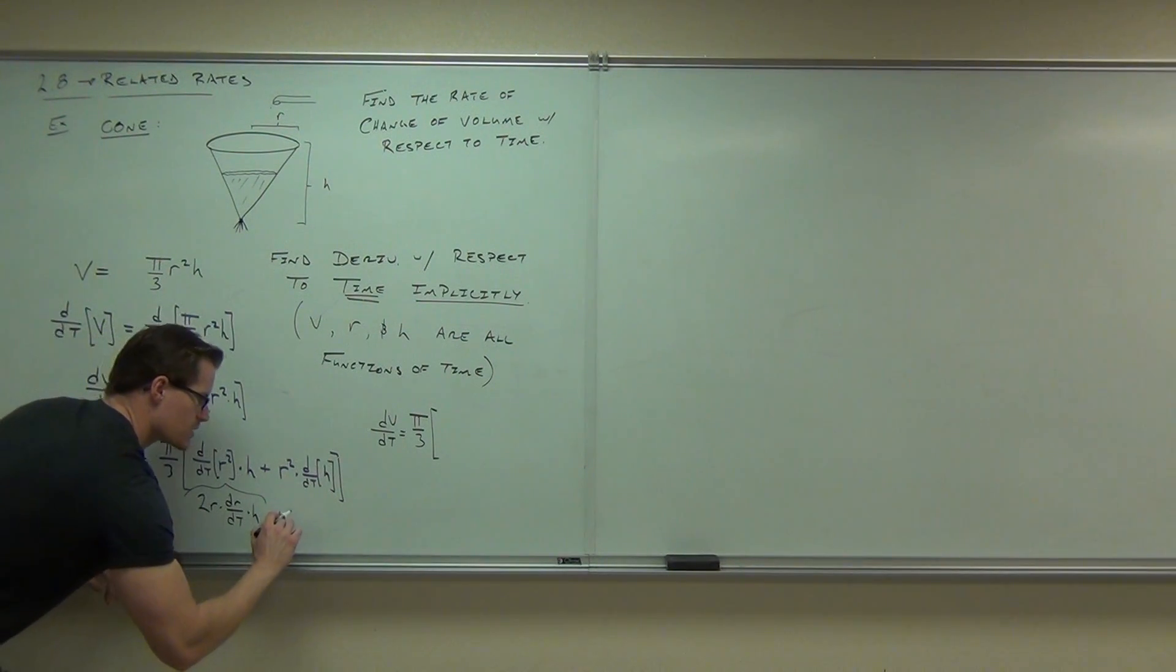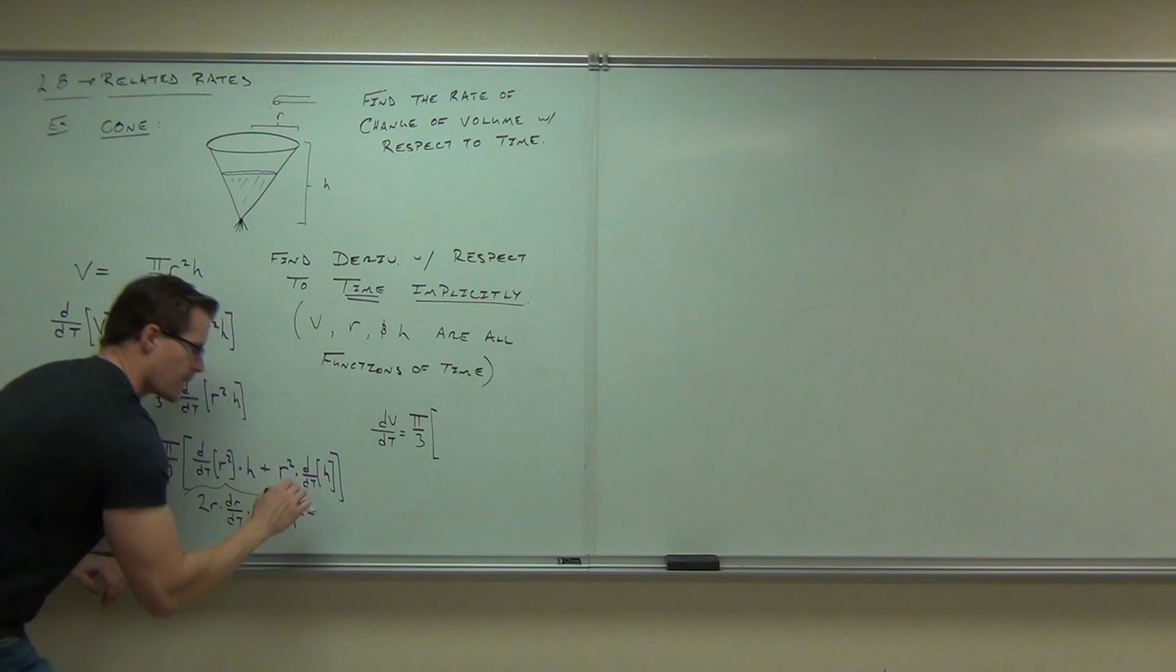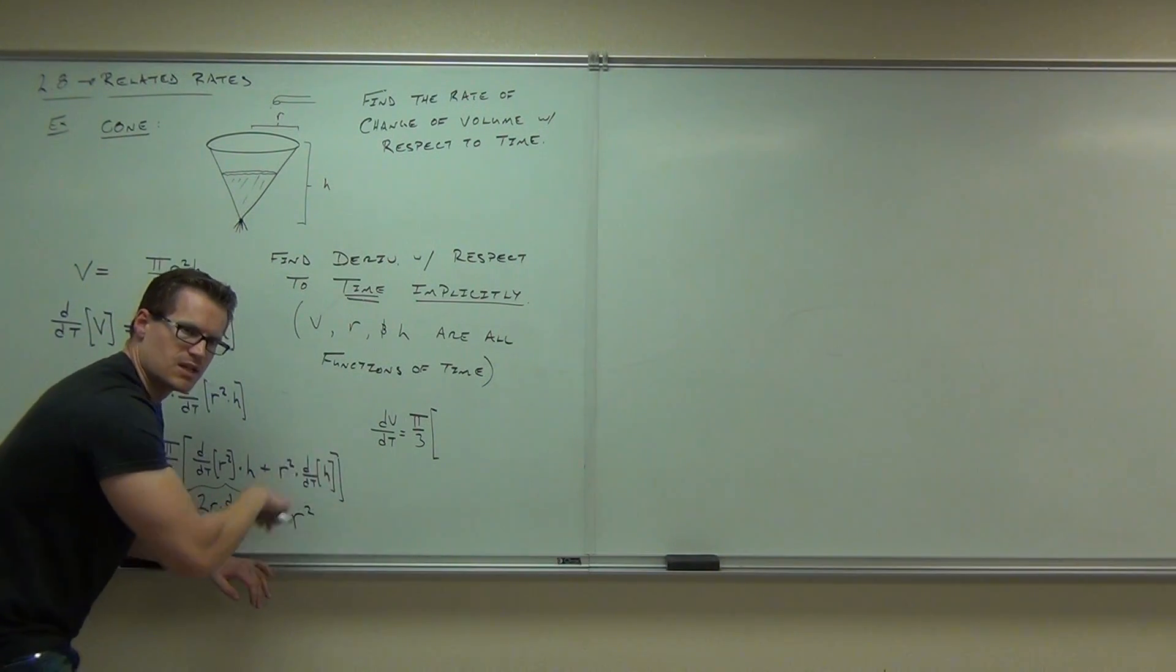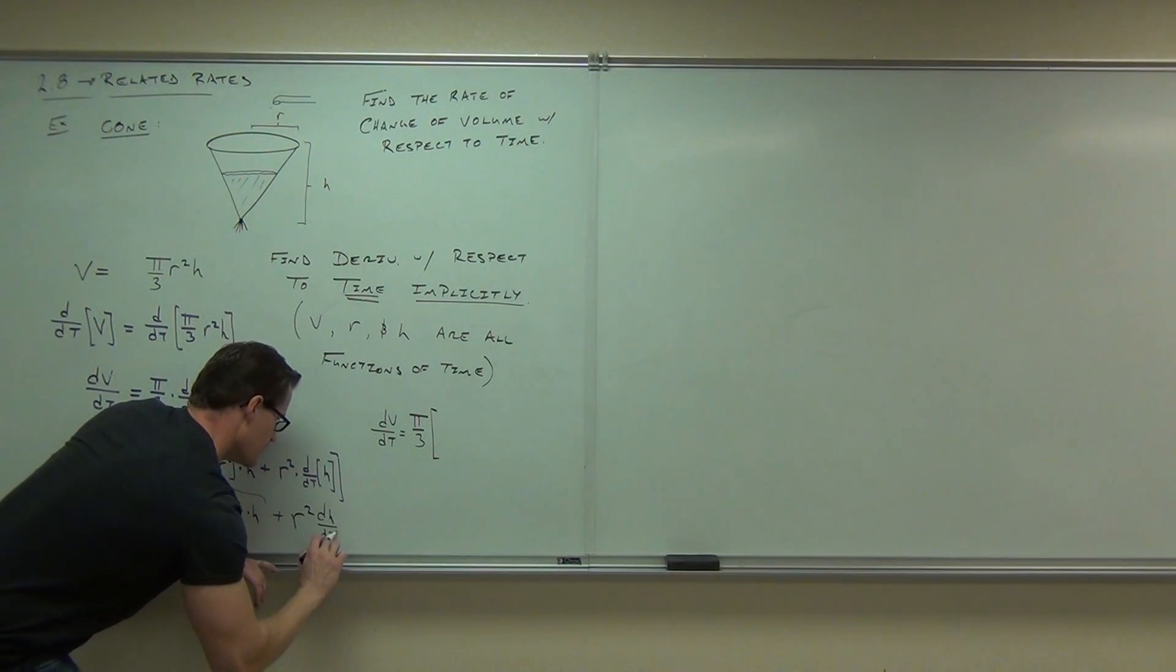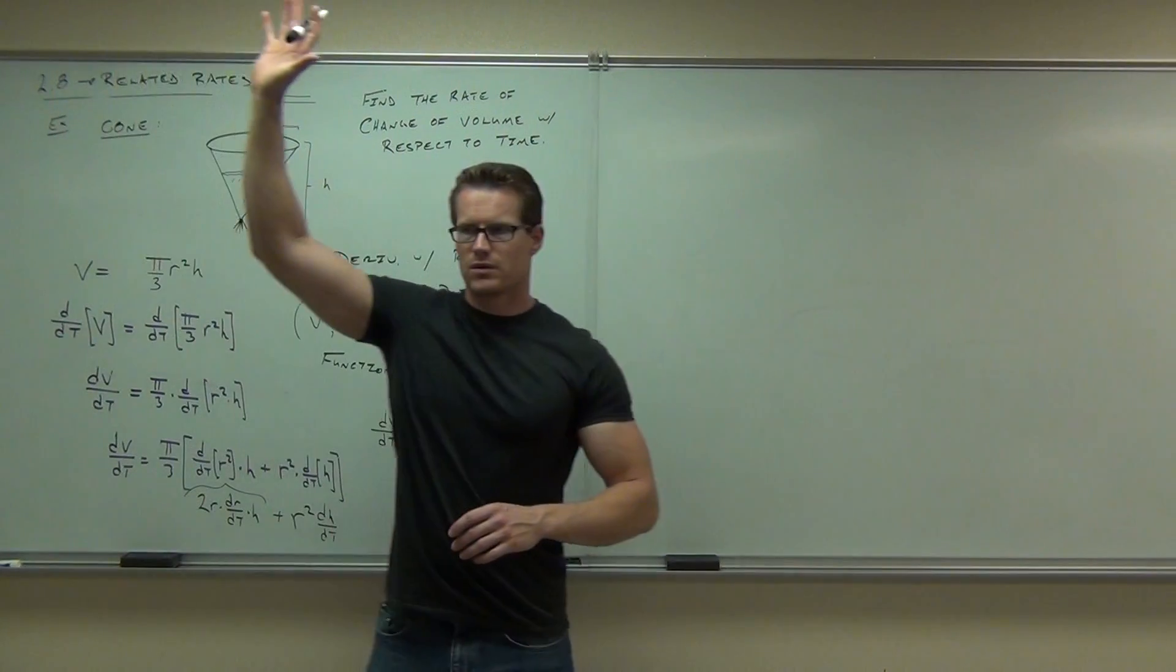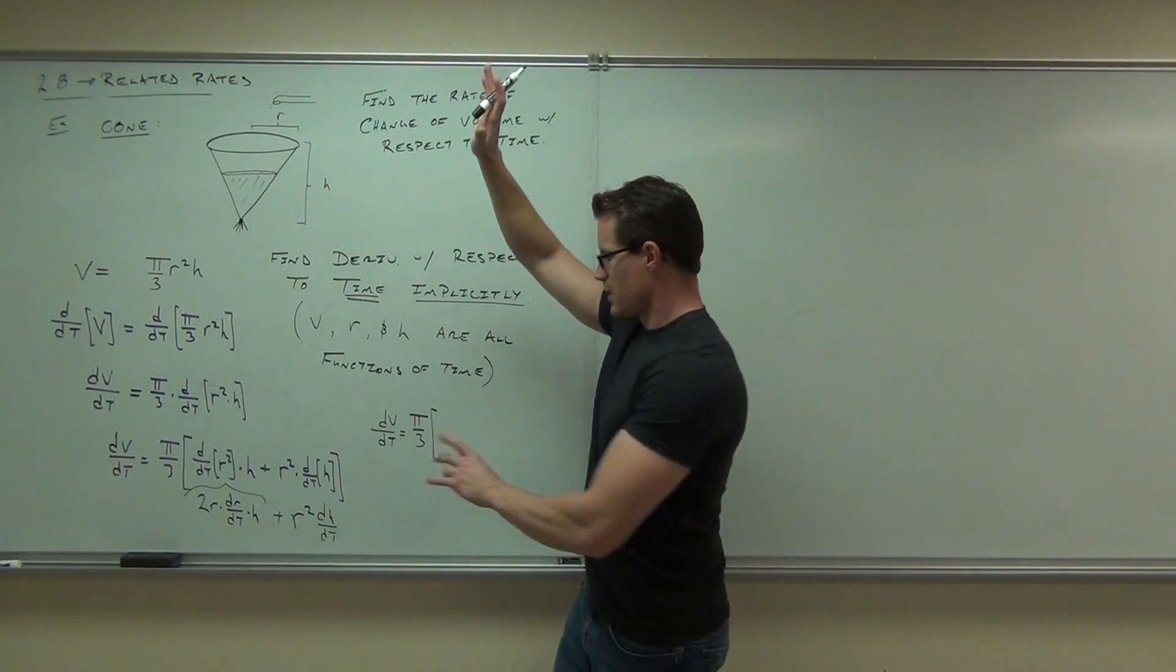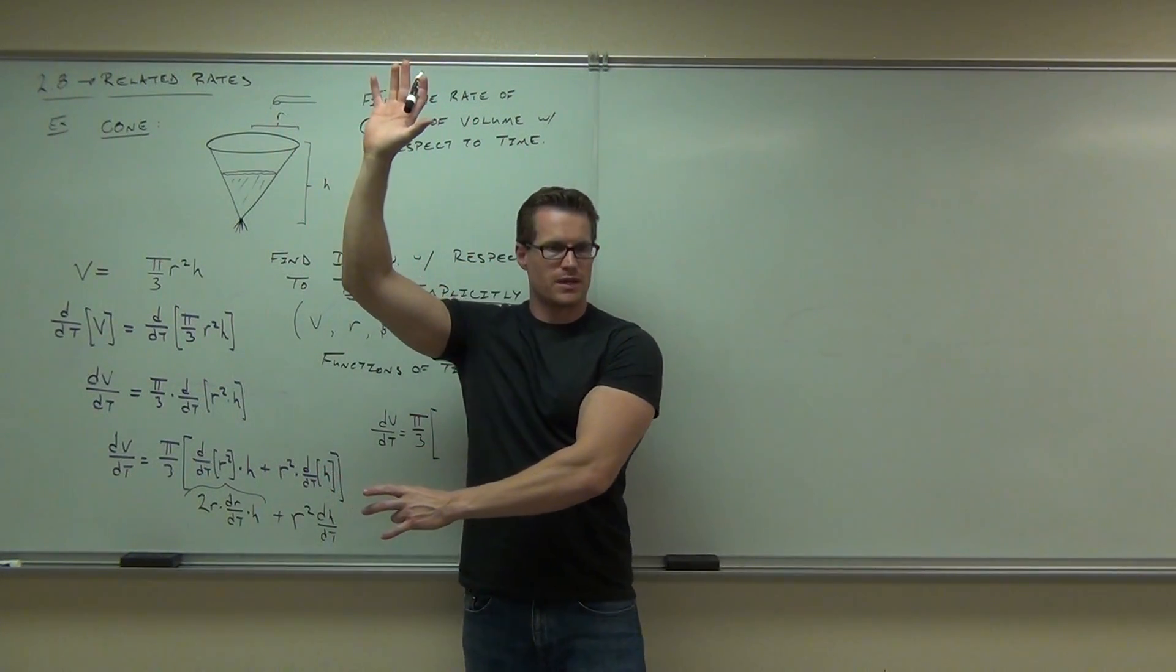Then the plus, this is going to give you R squared. What's the dH, dt? What's that going to give you? There's dH, dt. Show of hands. How many people got 2R, dR, dt, and then H, and then the R squared, dH, dt? Do you all get that as well?